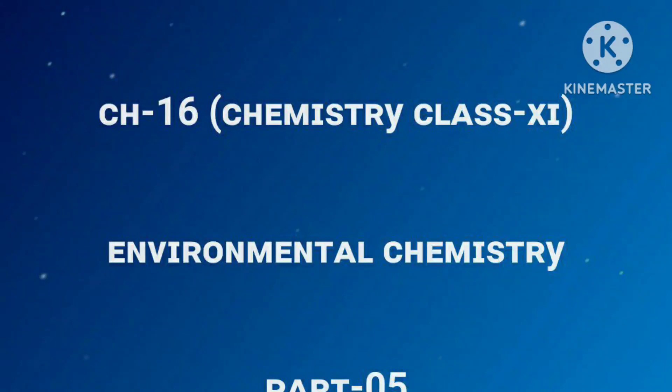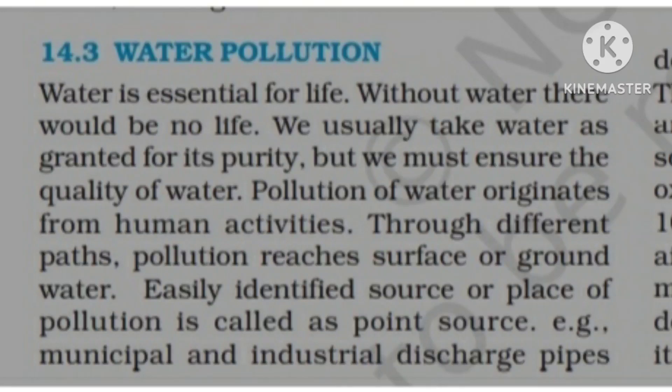Now let us start with water pollution. The first two points are point source pollution and non-point source pollution. Point source pollution is easily identified — examples include municipal discharge and industrial discharge.